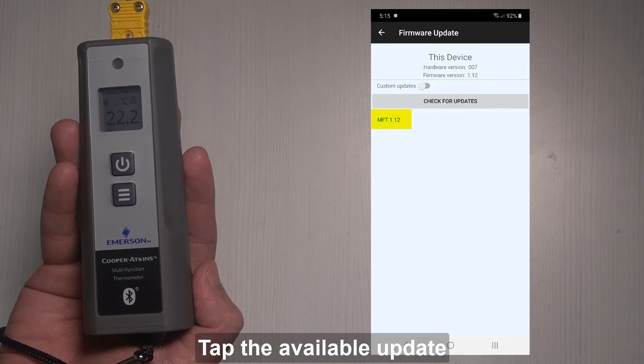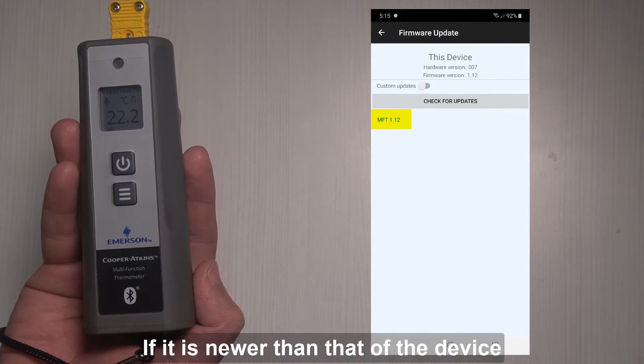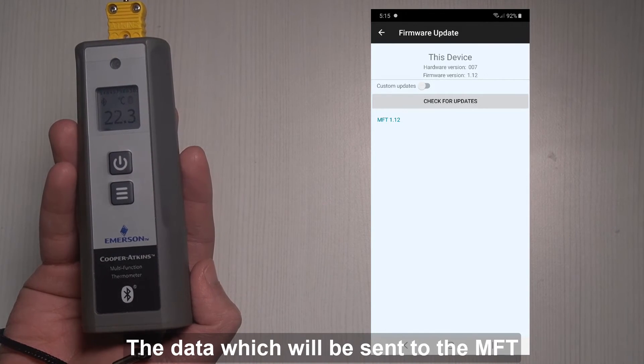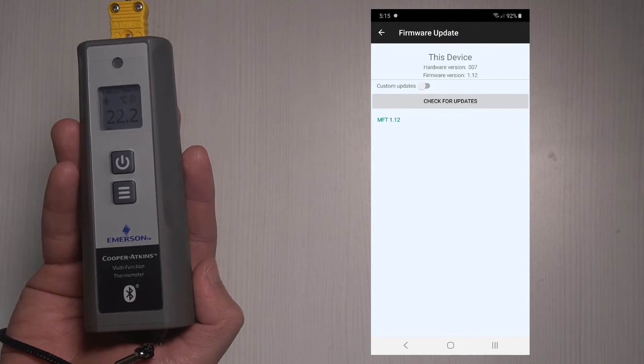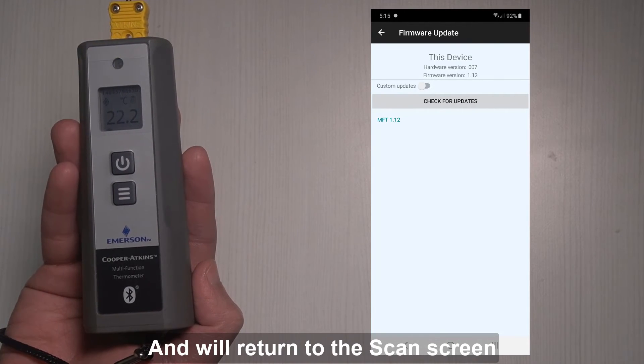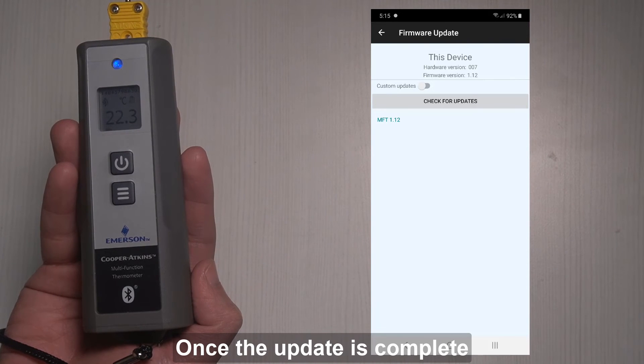Tap the available update if it is newer than that of the device. If you proceed, the app will download the data which will be sent to the MFT. The MFT will reset and return to the scan screen once the update is complete.